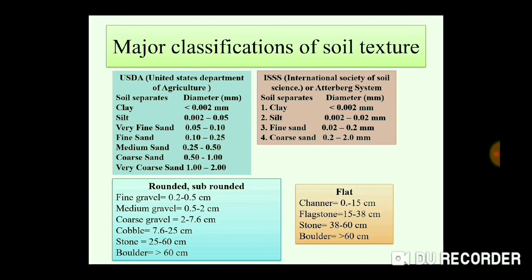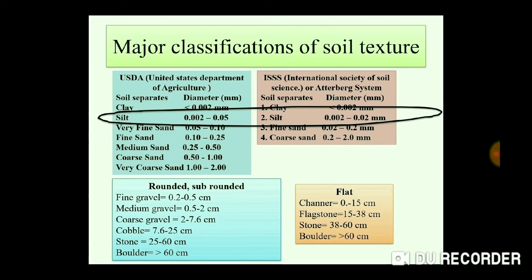Regarding clay size, it is less than 0.002 mm. You have to remember all the diameters. The silt diameter in USDA ranges from 0.002 to 0.05 mm, but the silt size in ISSS ranges from 0.002 to 0.02 mm. So USDA uses 0.05 mm and ISSS uses 0.02 mm for silt.